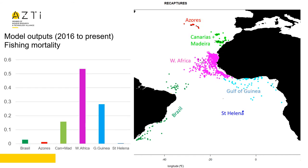Regarding the fishing mortality estimates, they are not surprising. They are low in Brazil, in Azores, and in Saint Helena, and they are highest in West Africa, where the most intense effort happens in Mauritania during summer months. It appears to be around half of this level in the Gulf of Guinea, where no similar concentrations as the Mauritania ones are taking place.